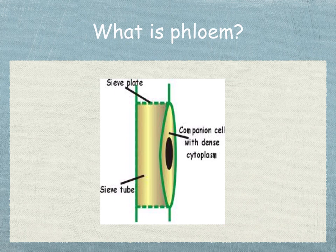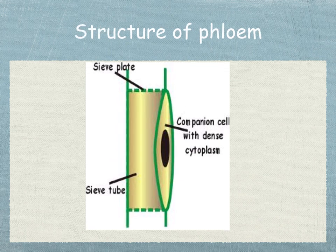So what is phloem? Well, this is the principal food collecting tissue in vascular plants. It carries organic material, for example sugars and amino acids, from the leaves or storage organs to other parts of the plant. It's a tissue made of sieve tube elements and the adjacent companion cells. You've also got parenchyma cells that act as packing tissue between other cells.